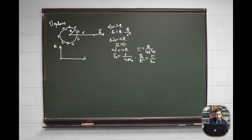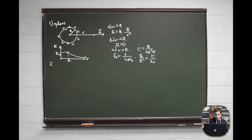Let's draw a graph to represent the dependence of electric field on distance from the center. You can see that big R is at the surface, and at this point the electric field is at its maximum. This is an exponential dependence. When the distance of the point charge small r is smaller than the radius of the sphere big R, meaning the point charge is within the sphere, there is no electric field.